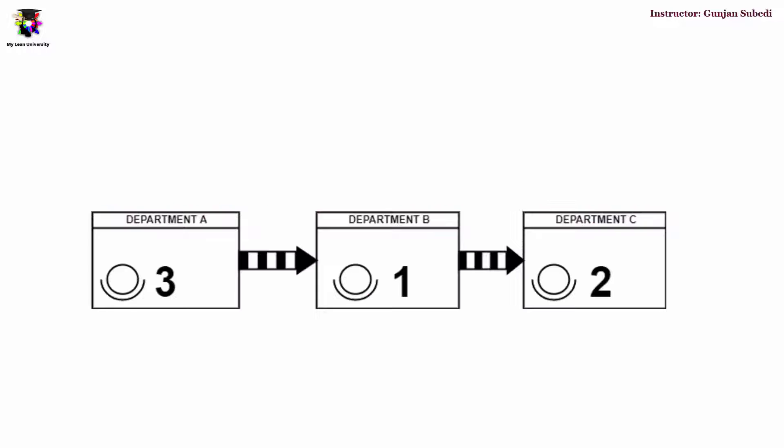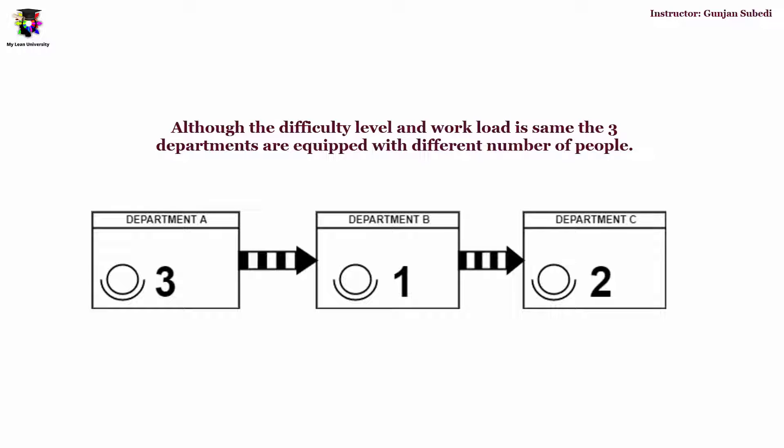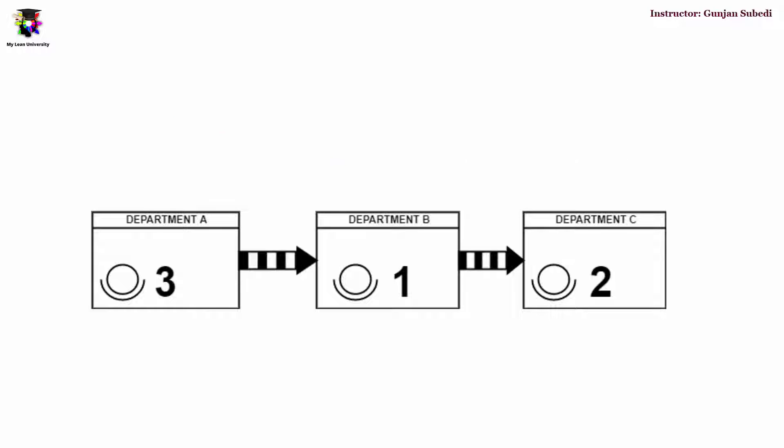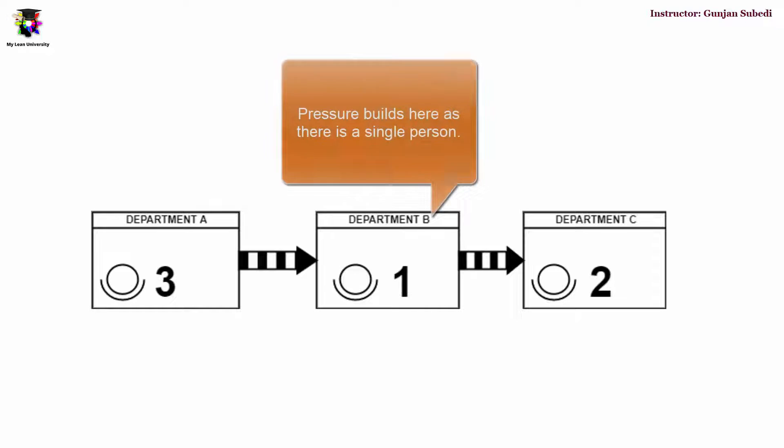The next improvement to consider for the future state value stream map may be balancing the process. Sometimes work activities are unevenly balanced. Suppose there are three departments — Department A, Department B, and Department C — which all have nearly the same work difficulty level. However, for process A there are three people, for process B there is one person, and for process C there are two people. This creates pressure for Department B as there is only a single person.